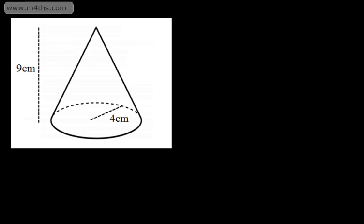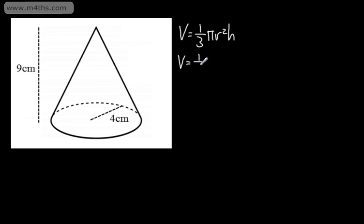Let's go ahead and look at some examples. We need to find the volume of a cone with a base radius of four and a perpendicular height of nine. Remember, this is just a circle. The volume is given as one-third pi r squared h. So let's fill in the numbers. We've got one-third pi, then r squared, which is four squared.